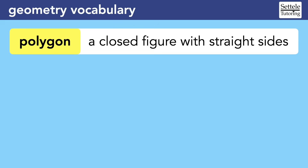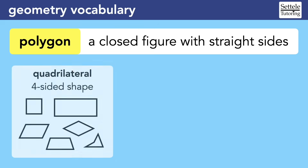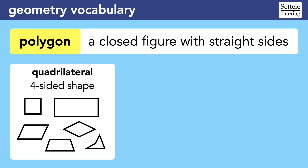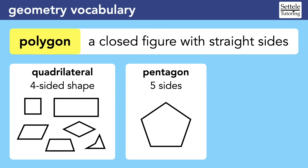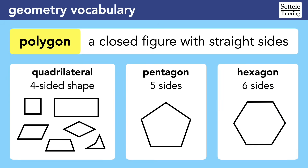This lesson will cover the essential vocabulary as well as some more obscure words that you might see on difficult questions. A polygon is a closed figure with straight sides — in other words, a polygon is a shape. Triangles are polygons, and so are the various types of four-sided shapes, which we collectively call quadrilaterals. A pentagon is a polygon with five sides, and a hexagon is a polygon with six sides.